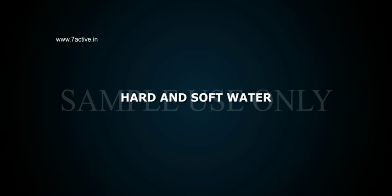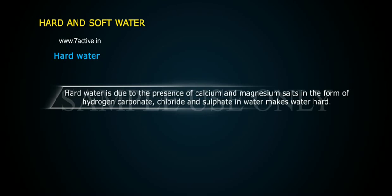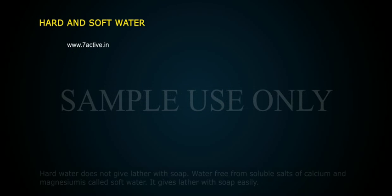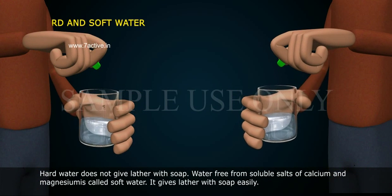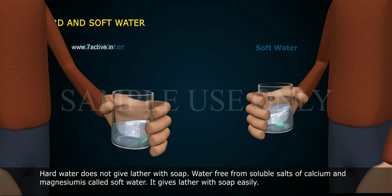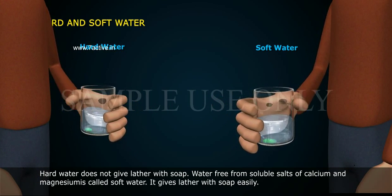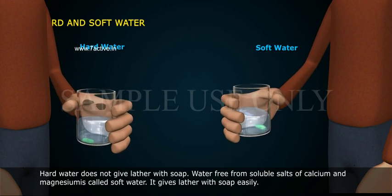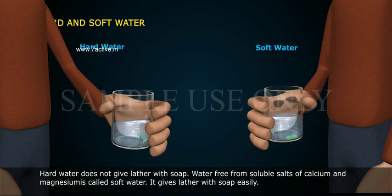Hard and Soft Water: Hard water is due to the presence of calcium and magnesium salts in the form of hydrogen carbonate, chlorate, and sulphate in water, which makes water hard. Hard water does not give lather with soap. Water free from soluble salts of calcium and magnesium is called soft water, and it gives lather with soap easily.